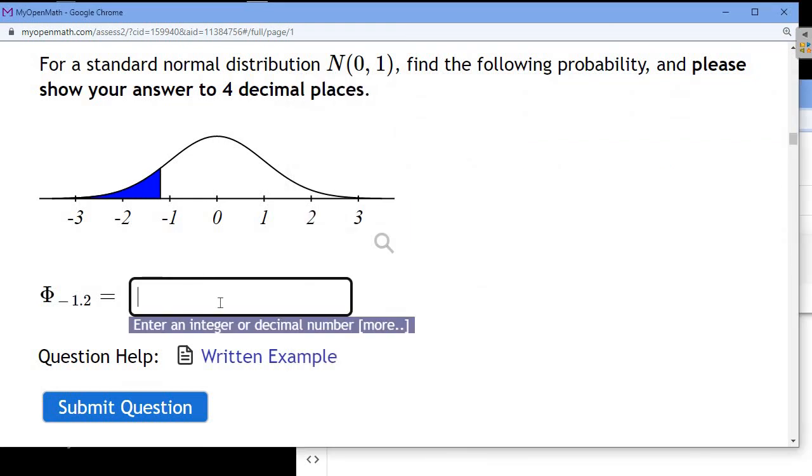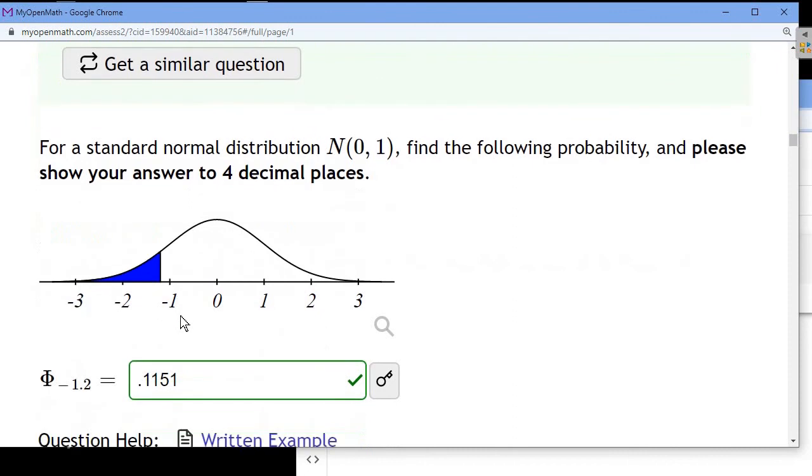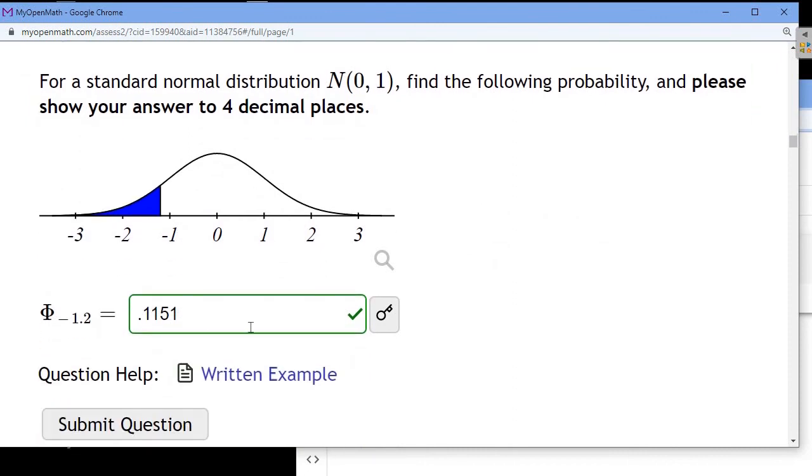The value separating the bottom 11%, that should be a decimal, 0.11, what was that, 0.1151. So it separates the bottom 11.51% from the top 88% and change percent. So that's how you use that normal CDF.